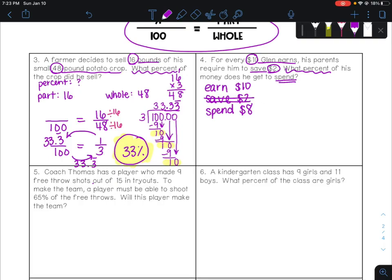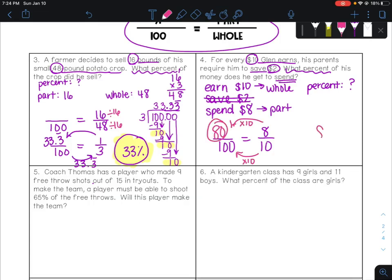So in this case, again, we need the part, the whole, and the percent. We know the percent is the thing that we're looking for. The part that he spends, and then the total that he earns would be the whole. So we could say something over 100 equals 8 out of 10. 8 is the part, 10 is the whole. And I can see pretty quickly that what I want to do is times 10, times 10, and then I would get 80, or 80%.